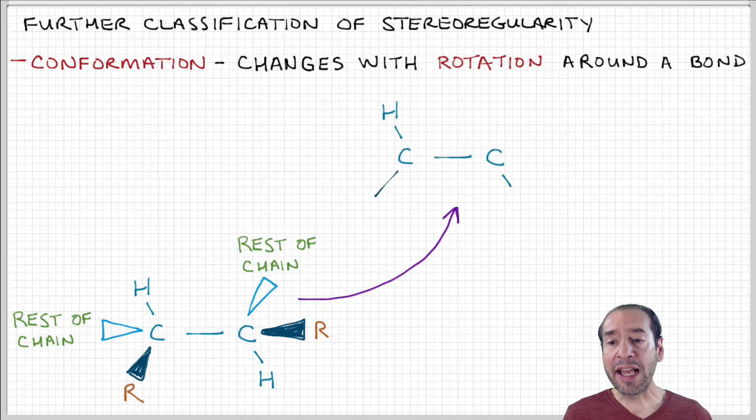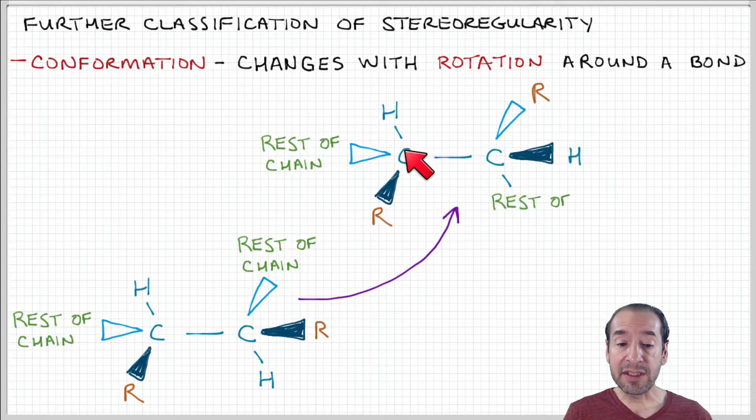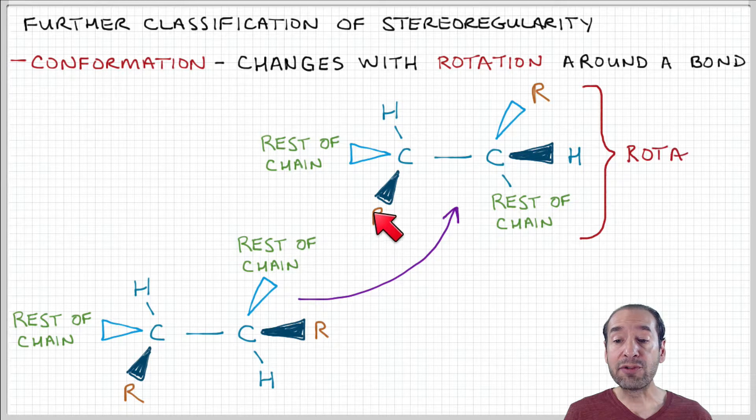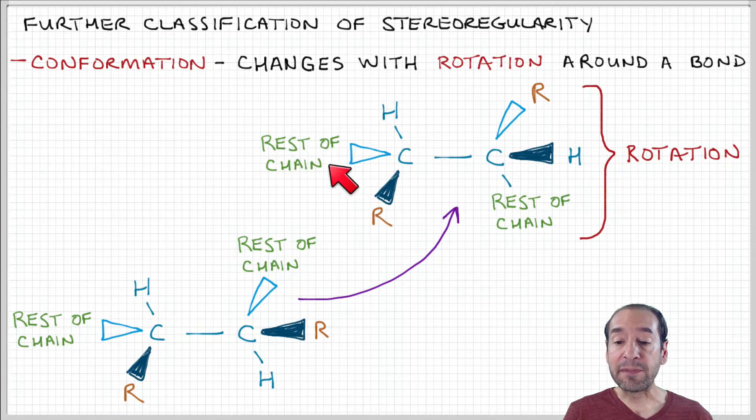So now, imagine that I draw this in a different way. So on the left-hand side, this is the same. I have this side group that's projecting out of the screen. And the rest of the chain goes into the screen. But now,